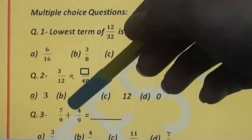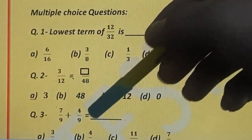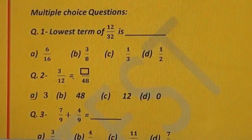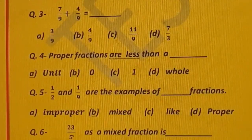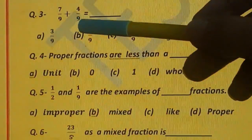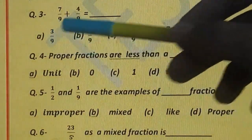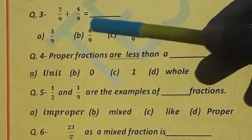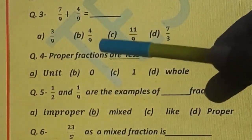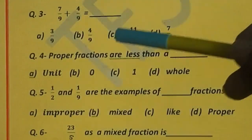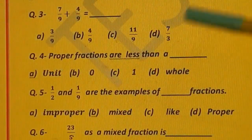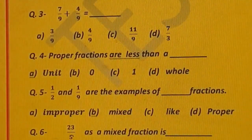Question number 3. 7 upon 9 plus 4 upon 9 is equal to dash. Options are: A) 3 upon 9, B) 4 upon 9, C) 11 upon 9, and D) 7 upon 3.